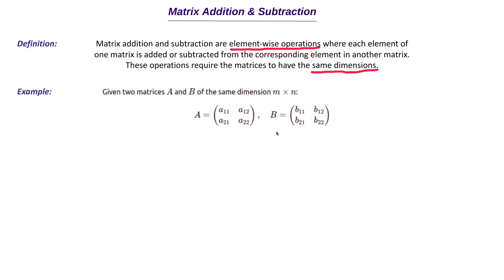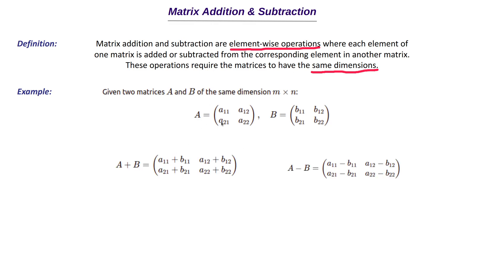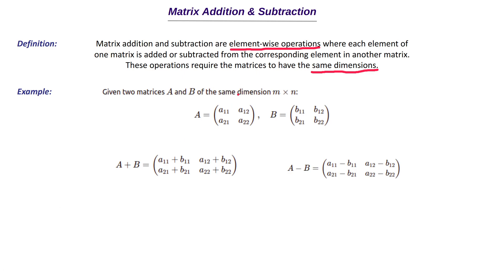If we want to add matrices A and B, since this is an element-wise operation, we add the corresponding elements: A11+B11, A12+B12, A21+B21, and A22+B22. Similarly, for subtraction we just do an element-wise subtraction. That's how you do matrix addition and subtraction.